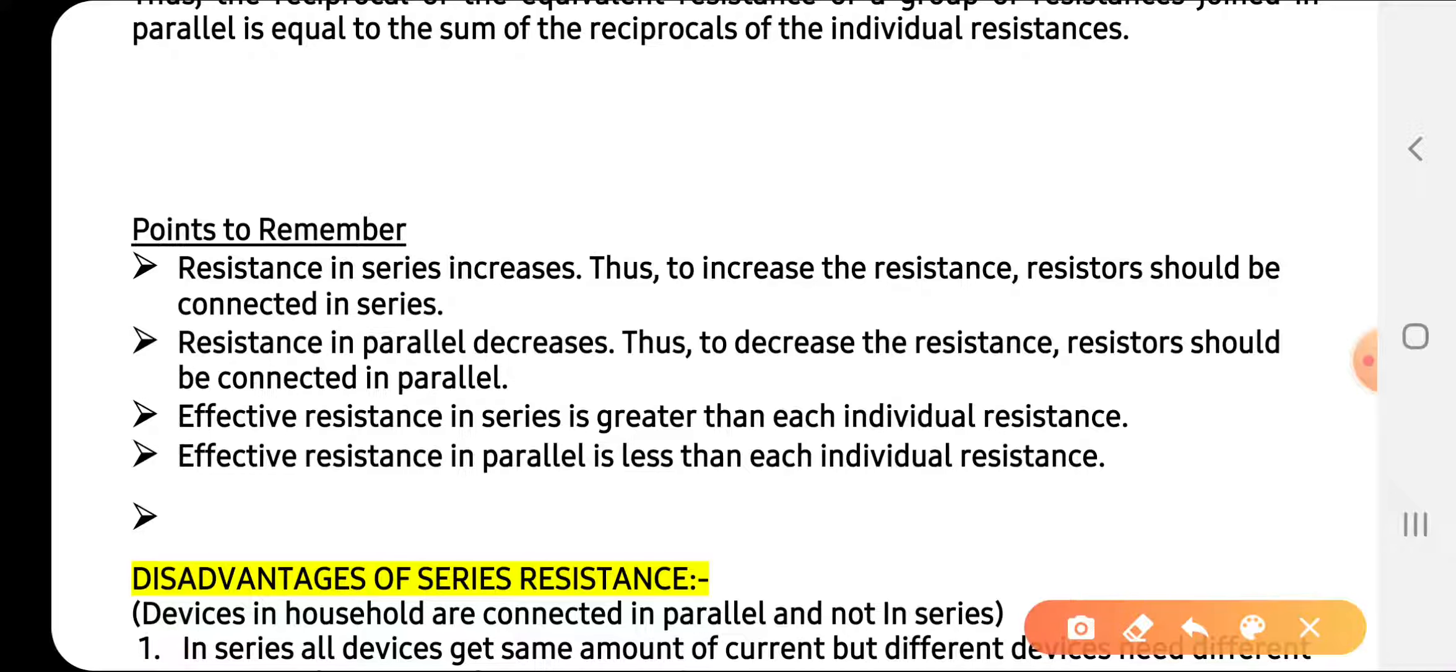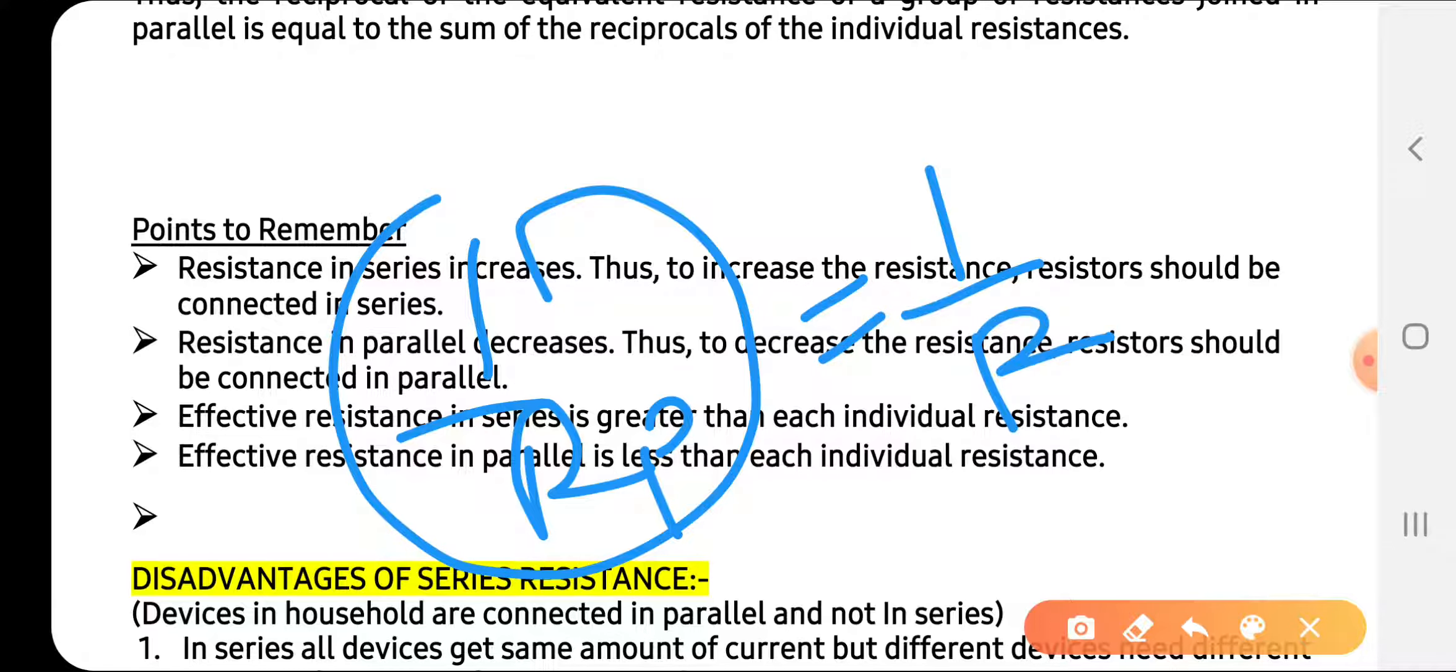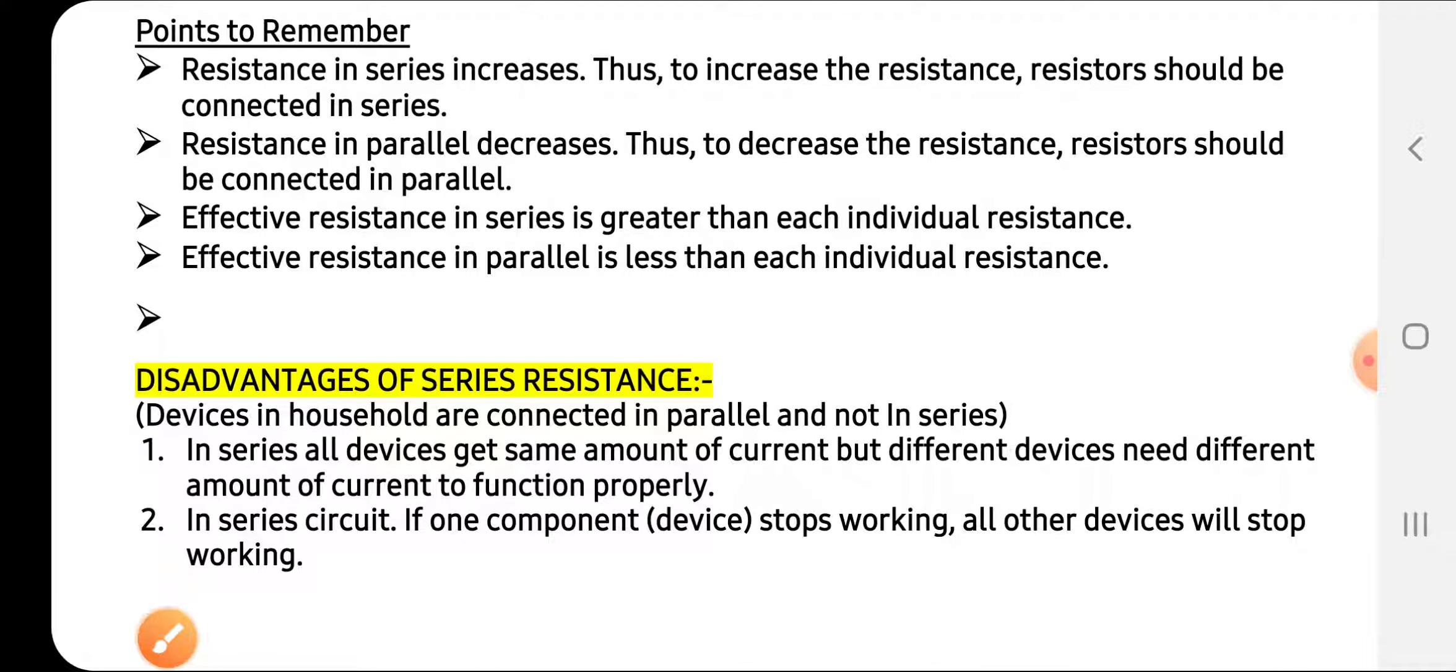The effective total resistance in series is greater than all individual resistances - R1 plus R2 plus R3 is their sum. Whereas in parallel combination, the total value Rp is smaller than the individual ones - much smaller than R1, R2, and R3. Resistance becomes very small when we use resistors in parallel combination.